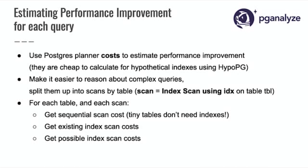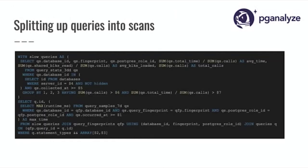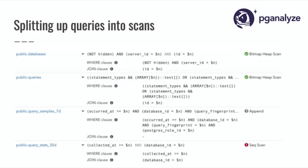For each table and each scan, we get the sequential scan cost — how expensive is it to just read the table — then get the existing indexes and their costs, and then get the possible indexes and their costs. Here's a query with four different tables that's hard to reason about. Thinking about scans lets us say: on the databases table, we're looking for a particular server ID and a particular ID that's not hidden. It lets us reason about queries in a way that's easy to understand. When you talk with an experienced person about indexing Postgres, they'll have a mental model like this — they'll look at the tables in the query and the explain plan and ask how to turn a sequential scan into a more efficient index scan.